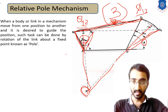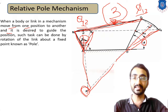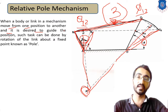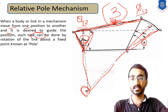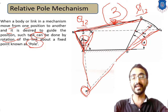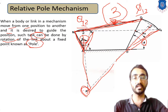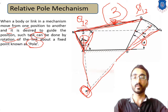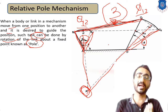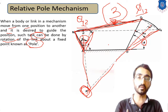Simply stated, when a link in a mechanism moves from its first position to another, and we want to guide how that motion occurs, this can be fulfilled by considering the rotation of the link about a fixed point known as a pole. By identifying this pole point, we can guide the motion and design various four-bar mechanisms or single slider mechanisms using the same approach.